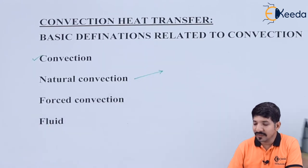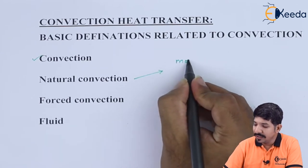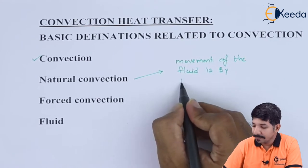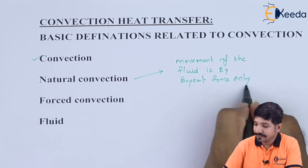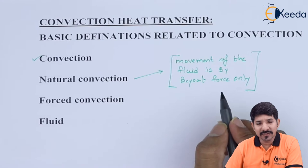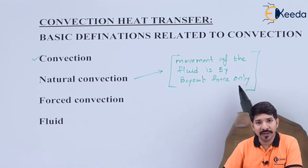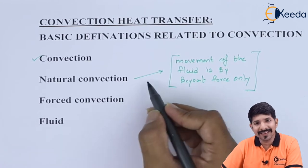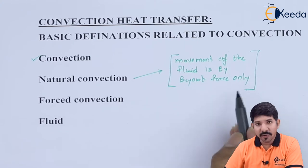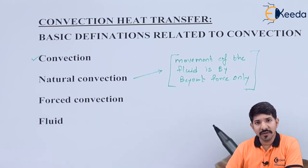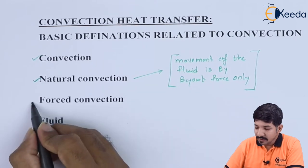Now let us talk about natural convection. In natural convection, the movement of the fluid is caused by buoyant force only. As in the boiling water example, there are no external forces involved — the fluid movement is caused solely by the temperature difference, which causes density difference, which brings in the buoyant force. The boiling of water is a classic example of natural convection.